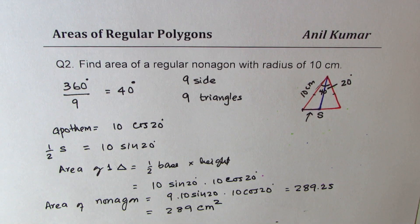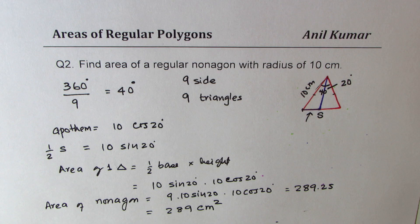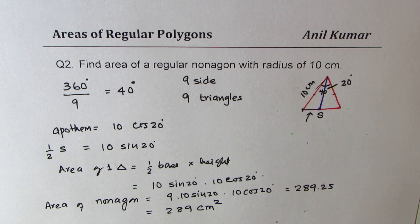That is how you find the area of a nine-sided regular polygon. If you are given the radius, you can find the apothem and the half-base using sine and cosine of half the central angle at the vertex. Feel free to write your comments and share your views. If you like and subscribe to my videos, that would be great. Thanks for watching and all the best.